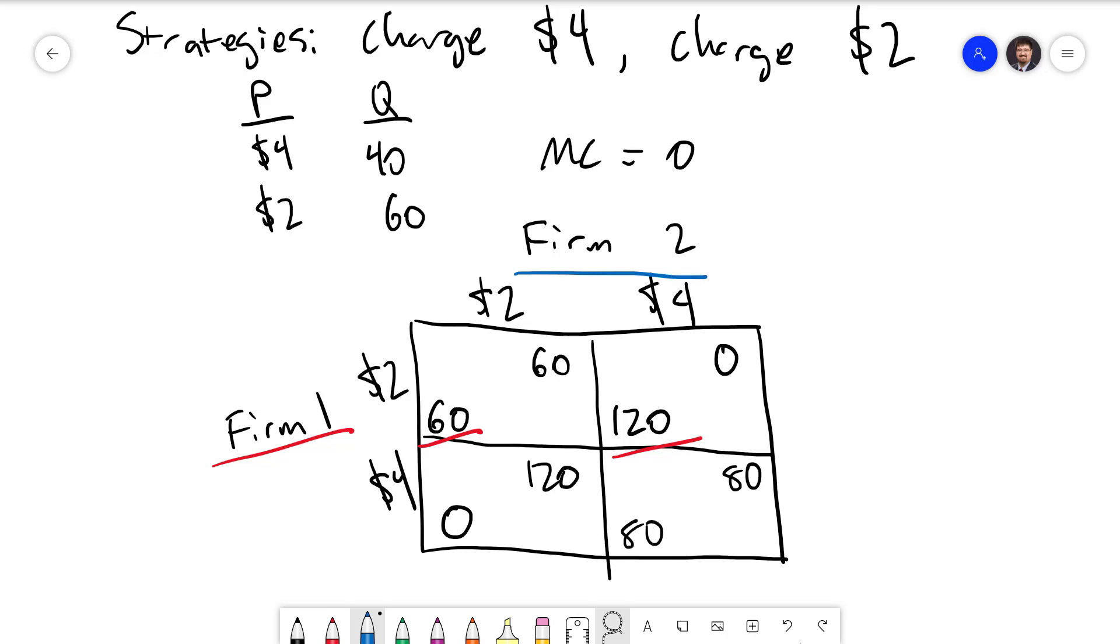Doing the same thing for firm 2, if firm 1 charges $2, then the better choice is going to be $2 as well since 60 is better than 0. And if firm 1 chooses $4, then firm 2's best response will be choose $2 because 120 is better than 80.